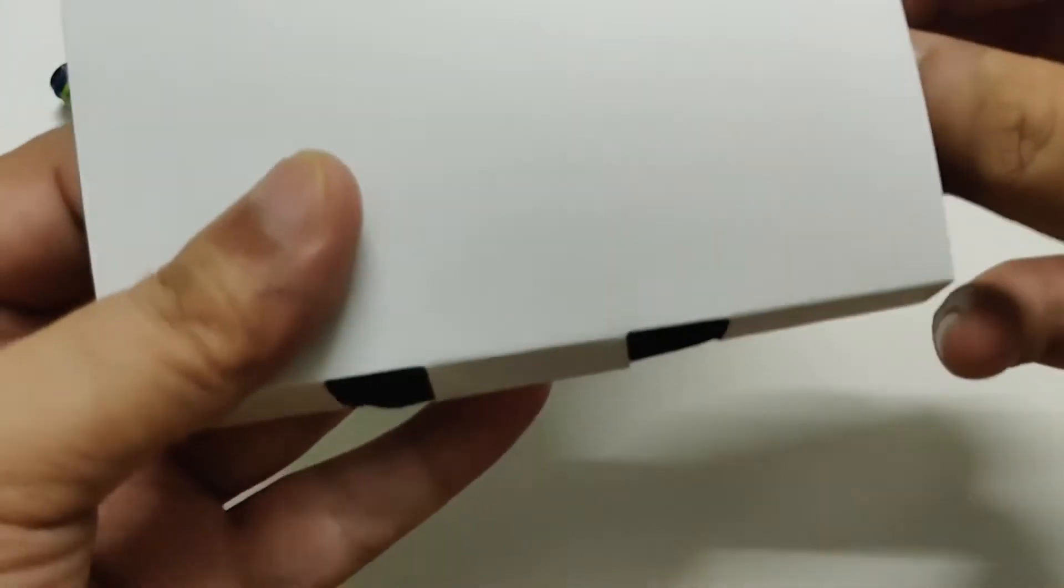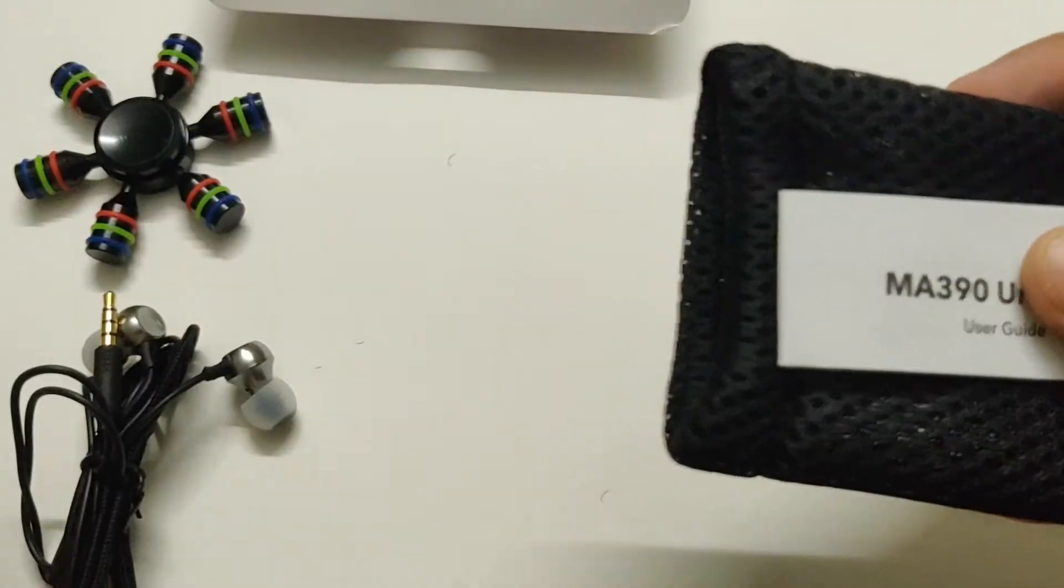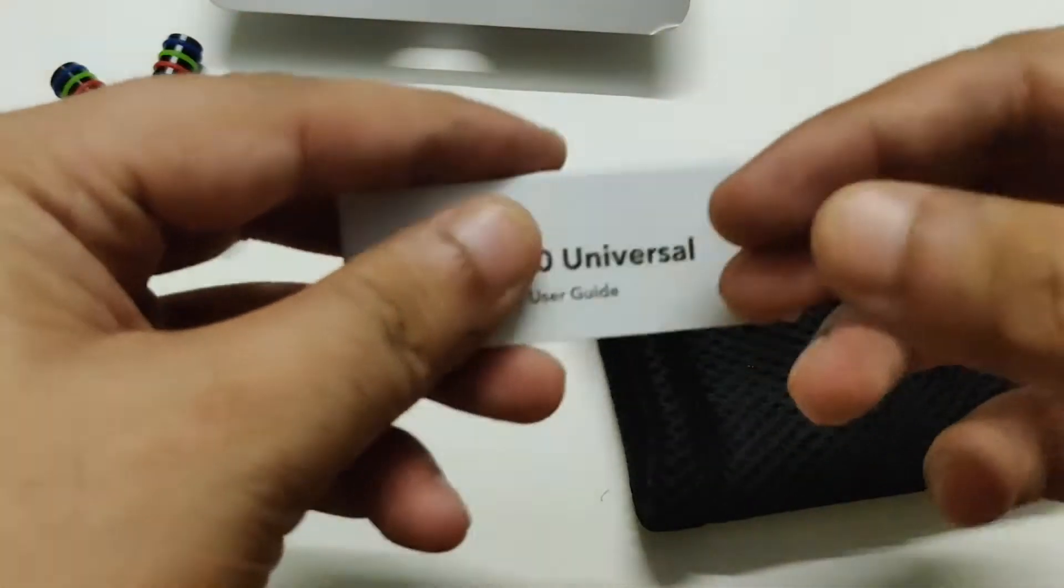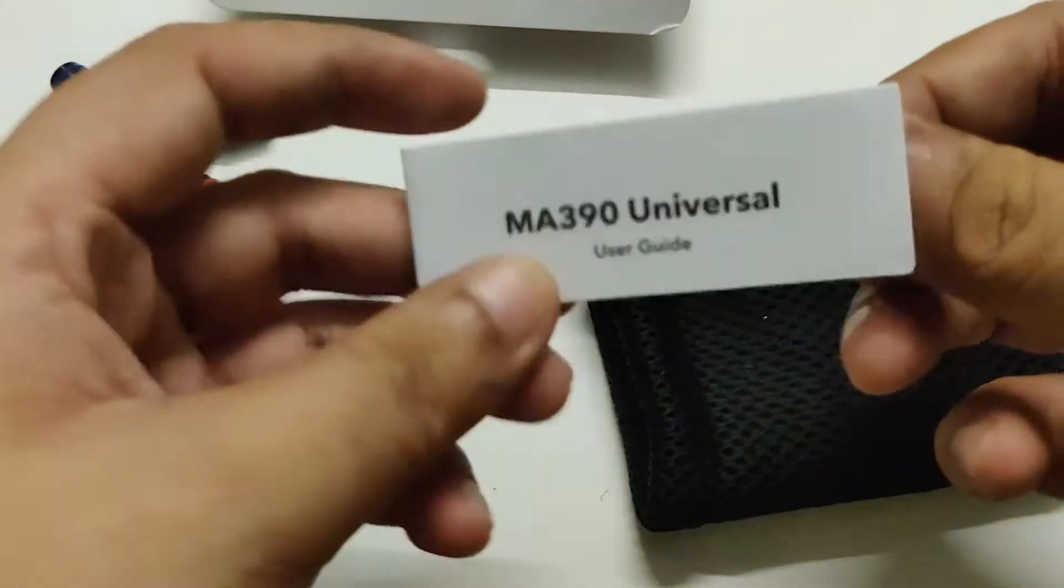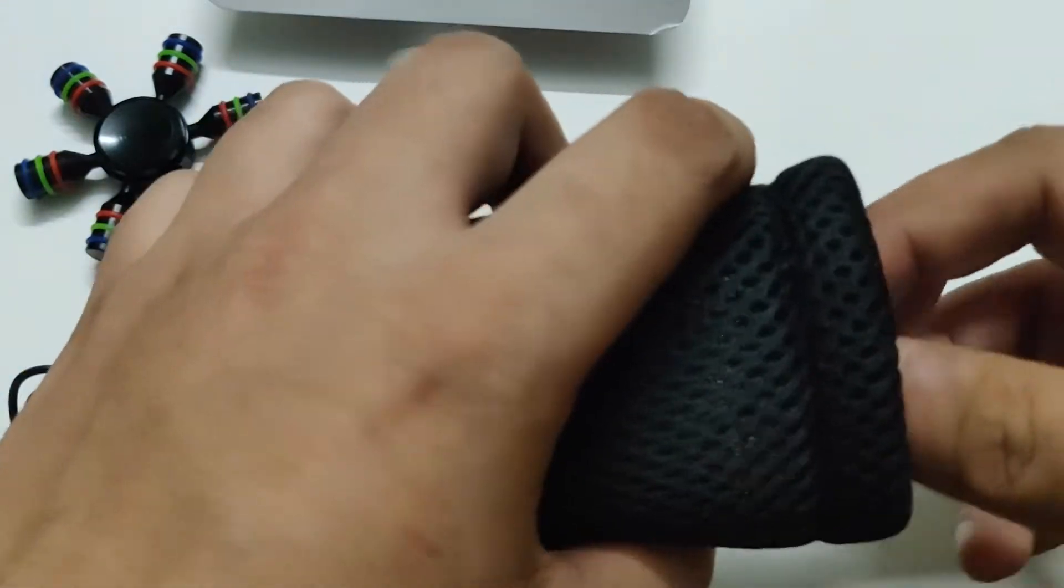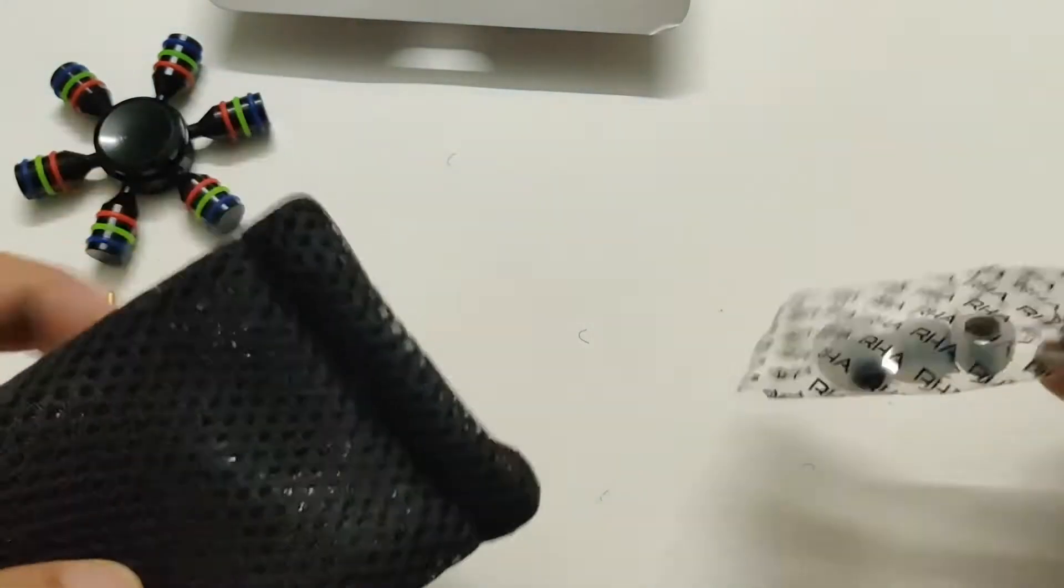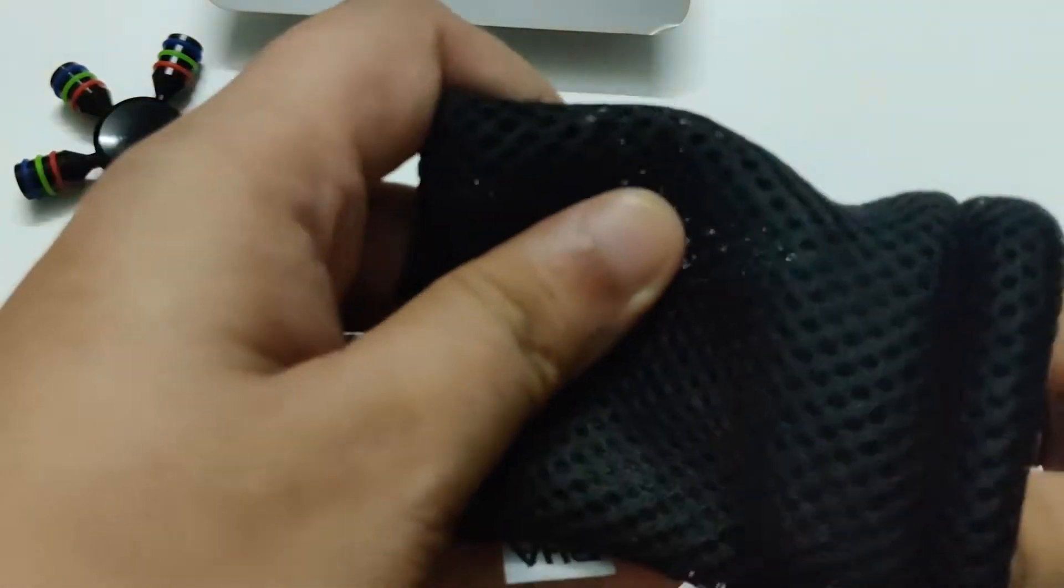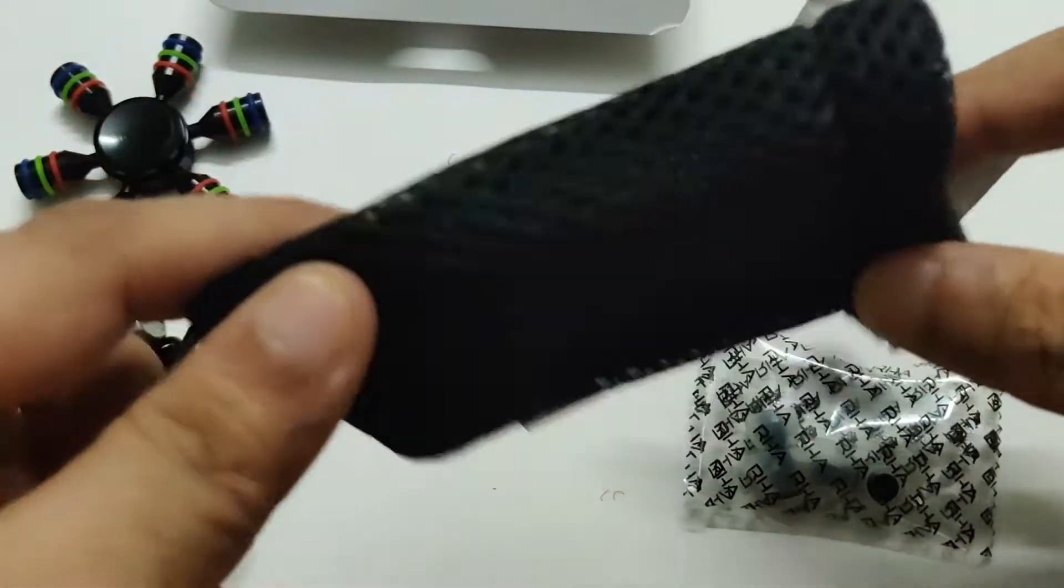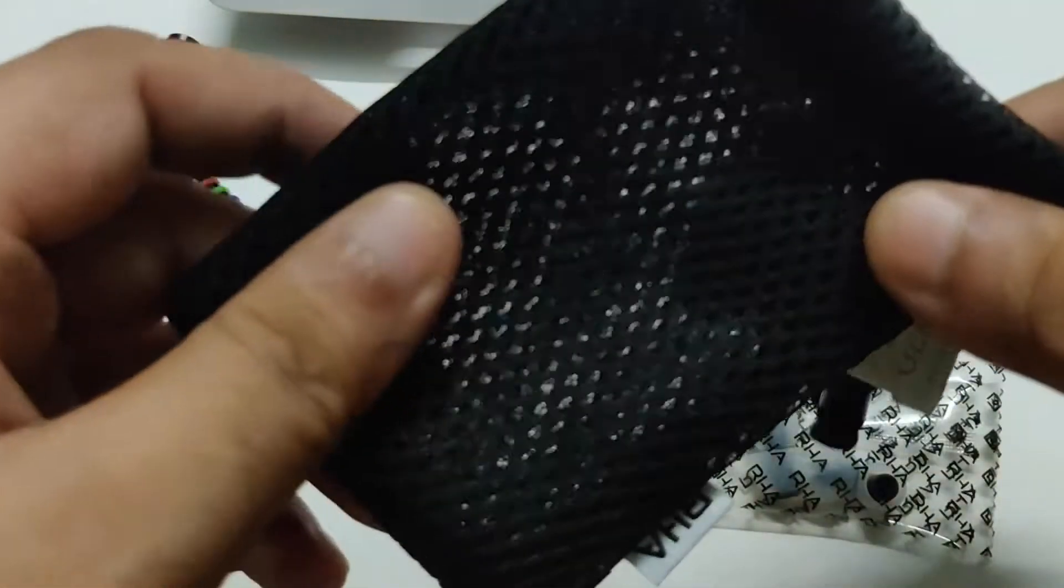Next you get a pouch and a small user guide. I don't know what user guides are for in earphones but still. Next the best part about RHA is the ear tips that they give which are of great quality. This is a carrying pouch that they give along with it.